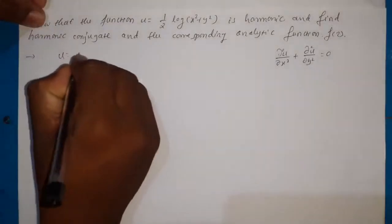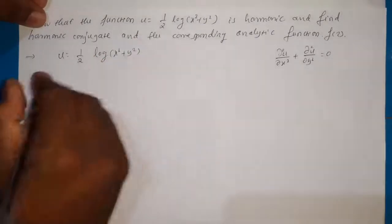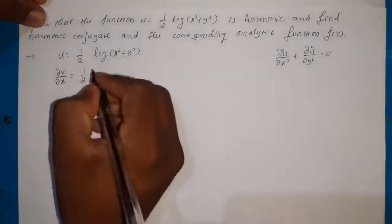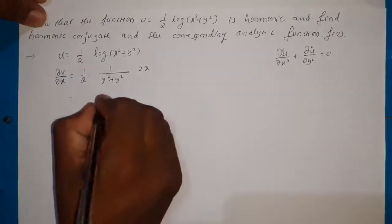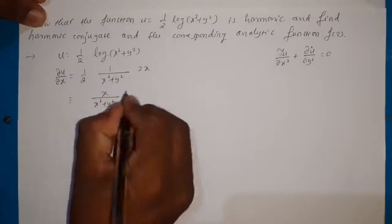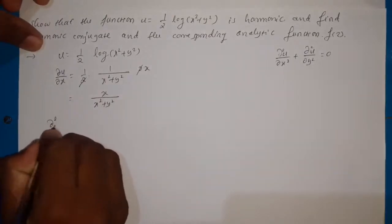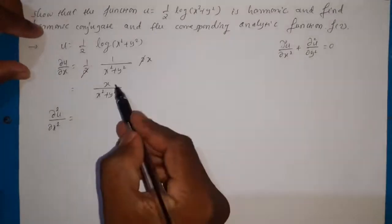Given u = (1/2) log(x² + y²), we find ∂u/∂x = (1/2) · (1/(x² + y²)) · 2x = x/(x² + y²), where the 2's cancel. To find ∂²u/∂x², we differentiate ∂u/∂x = x/(x² + y²) with respect to x again. This is of the u/v form.